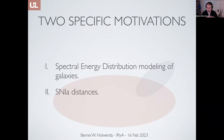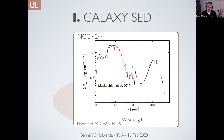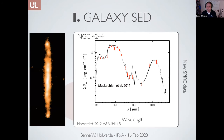There are two specific motivators I hone in on: spectral energy distribution modeling of galaxies and supernova 1a distances. Here's one example, NGC 4244, where the red points are photometry measurements at particular wavelengths from 2011. You model the shortest wavelengths as a combination of blackbodies — your stars — and then dust as a second blackbody around 100 microns. However, as soon as you add Herschel SPIRE data, you get a submillimeter image showing the galaxy is actually quite clumpy.